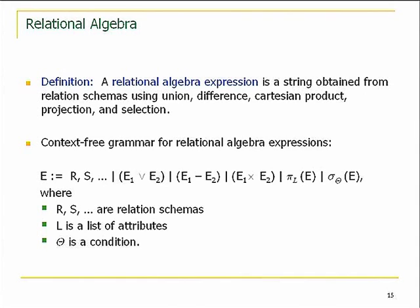Formally, relational algebra is a string obtained from the basic relations by applying these operations. Notice that each of these operations is very simple, but the strength comes when you combine them together. Codd went on in his second paper to give non-trivial examples of new operations that you could derive from these basic operations.